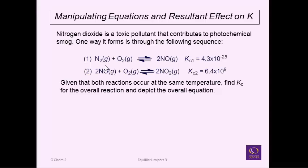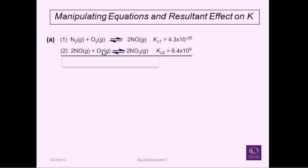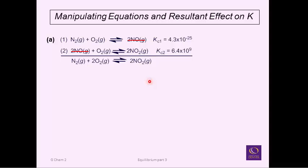Here we have nitrogen reacting with oxygen to make nitrogen monoxide — an unfavorable reaction because we breathe nitrogen and oxygen all the time and this poisonous gas isn't automatically formed. Then in a second step, if you took NO and reacted it with more oxygen, you could make nitrogen dioxide. Adding these together as we learned with Hess's law, reactants and products common to both equations cancel, and the remainder is the net equation: N2 plus two moles of O2 yields two moles of nitrogen dioxide.